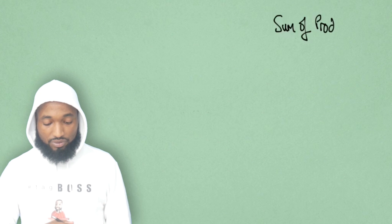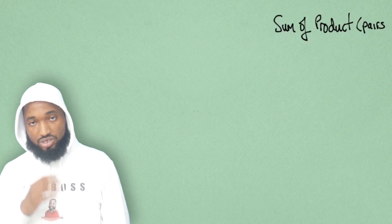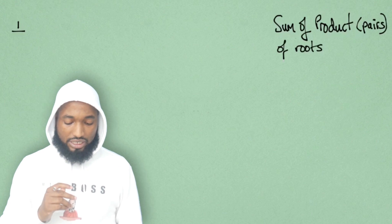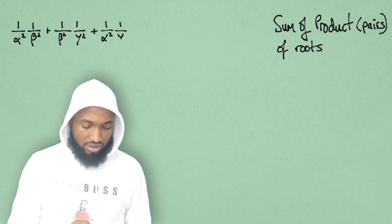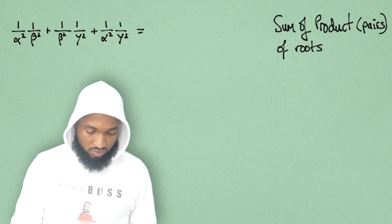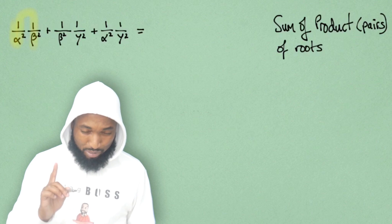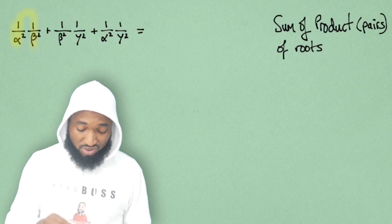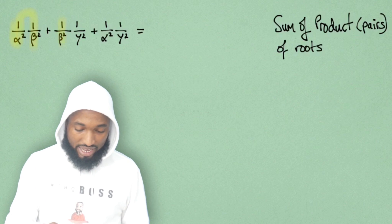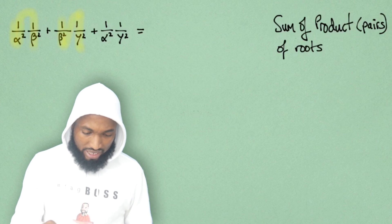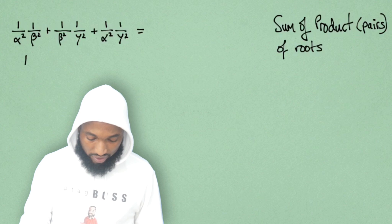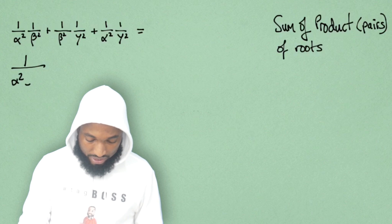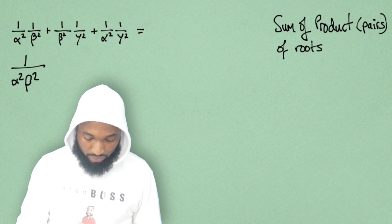Now let's do the sum of the product of the roots taking two at a time — the pairs. Now this is this multiplied by that, because remember we use the new roots. But anyway, you can express this as just 1 over alpha squared beta squared.